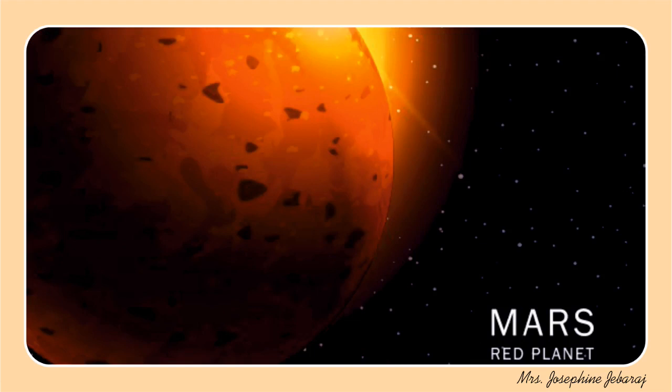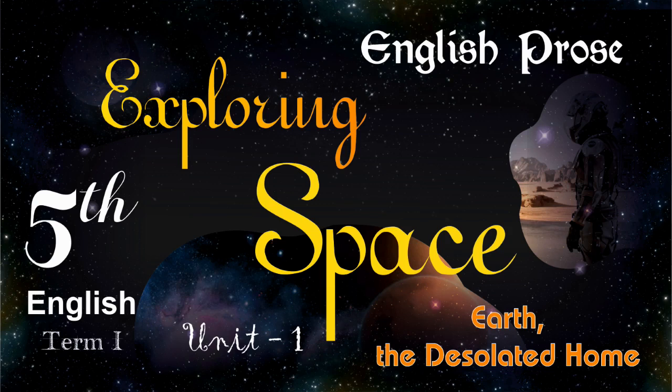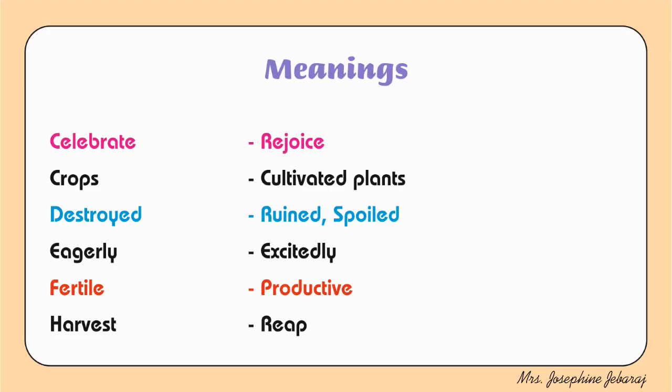Dear students, now we know about the solar system, the blue planet Earth, and the red planet Mars. Shall we start our lesson? Unit 1 — Earth, The Desolated Home. Children, let's learn a few more word meanings apart from the ones given in your textbook, to help us learn the lesson easier and better.